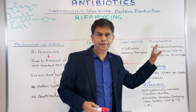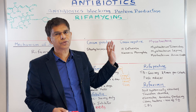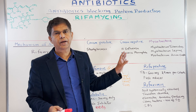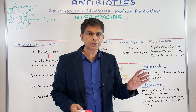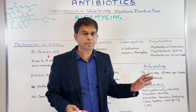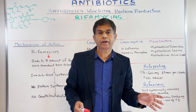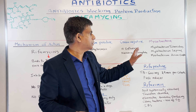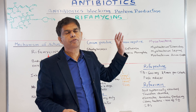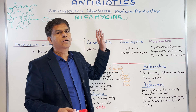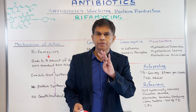To summarize: rifamycin binds to the beta subunit of the bacteria's DNA-dependent RNA polymerase, inhibiting RNA synthesis, leading to no protein synthesis and no growth or multiplication of the bacteria. Now let's look at the coverage — what kind of coverage do we have?